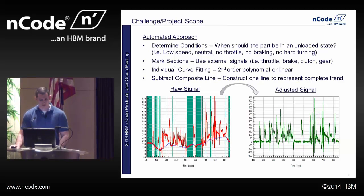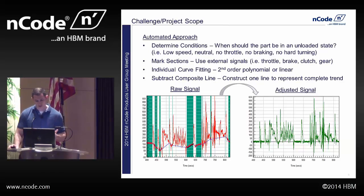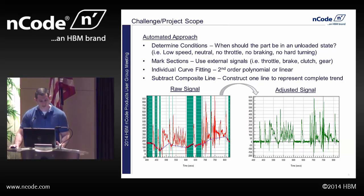You determine your conditions, then highlight all sections meeting those conditions using the external signals. As a first step you could apply a linear curve fit to each section, but that doesn't always work for short time frames for the same reasons linear removal fails on the whole signal. So I use a small running mean or a second-order curve fit — fitting a parabola to the highlighted sections — and then draw a straight line in between them.